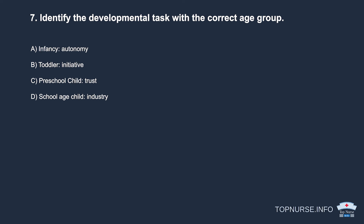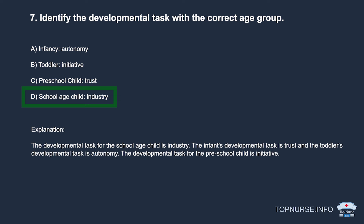Question 7: Identify the developmental task with the correct age group. a. Infancy — autonomy. b. Toddler — initiative. c. Preschool child — trust. d. School-age child — industry. Correct answer: d. School-age child — industry. The infant's developmental task is trust, the toddler's is autonomy, and the preschool child's developmental task is initiative.